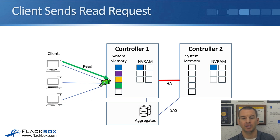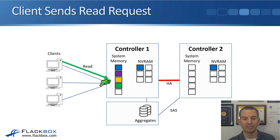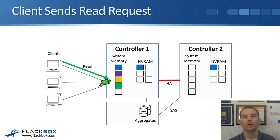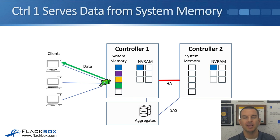Then a client sends in a read request for the green data. Controller 1 checks to see if that data is in the cache — and it is. So Controller 1 immediately serves that data from the system memory cache and sends it back to the client. That is much faster than having to fetch it from disk.